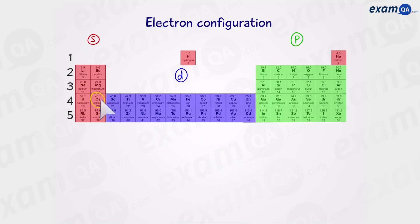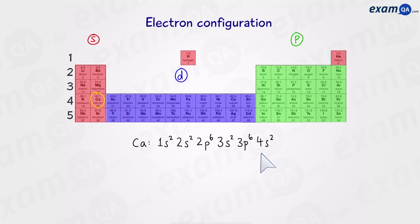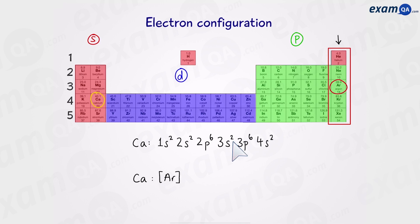Let's try another element — calcium. Why don't you pause the video and write down the electron configuration for calcium? The electron configuration for calcium is 1s², 2s², 2p⁶, 3s², 3p⁶, 4s². Electron configurations can be quite long to write, so there's also a condensed way using noble gases as checkpoints. The most recent noble gas before calcium is argon. So we can write calcium as [Ar] 4s² — all the earlier part is represented by argon.